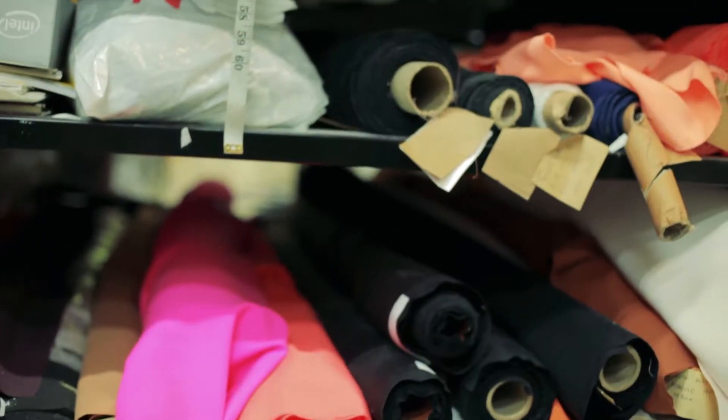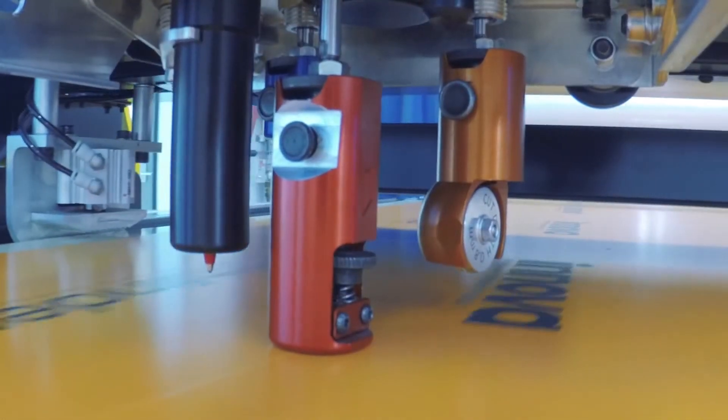One of the benefits of the cutting machine is that it can actually handle a lot of our different fabrics. We do a lot of cut and sew knitwear, silks, wovens, heavy, all the different weights this machine can handle with just a slight setting adjustment. It's great.